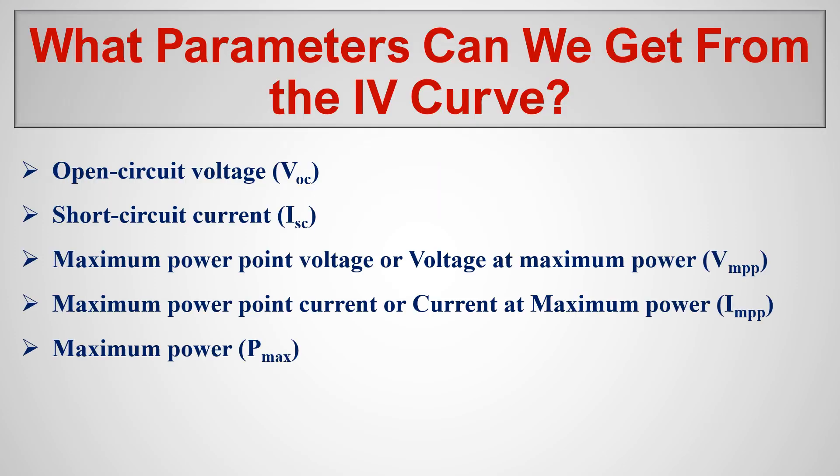So what parameters can we get from the IV curve? We have open circuit voltage VOC, short circuit current ISC, voltage at maximum power point VMPP, current at maximum power point IMPP, and maximum power Pmax. These are the parameters we can find from the IV curve.